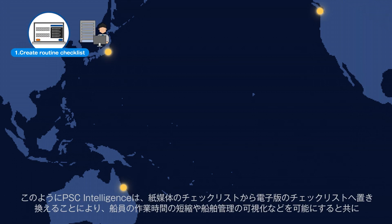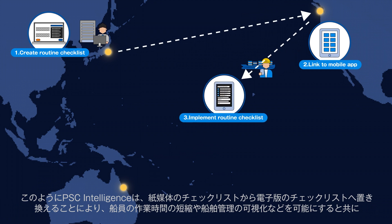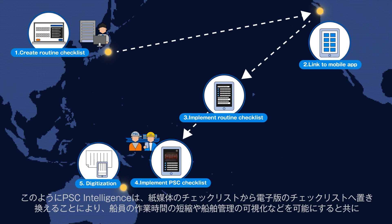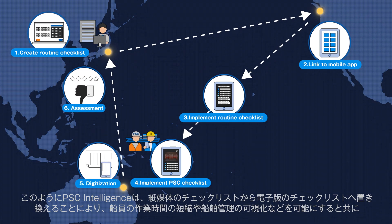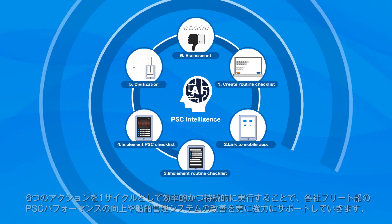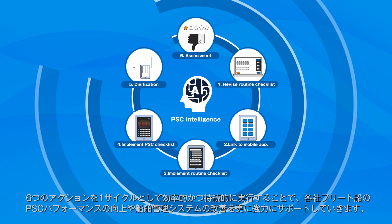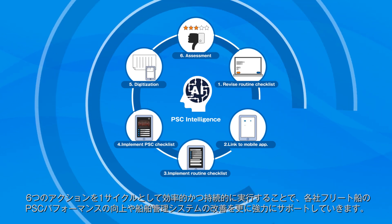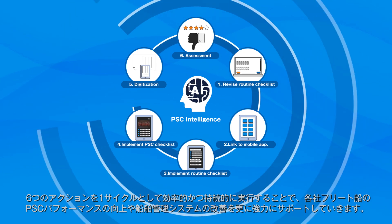In this way, PSC Intelligence will allow crews and management companies to save working time and have better visibility over their ship management by replacing papers with modern electronic checklists. It will further support the improvement of PSC performance for each company's fleet and ship management systems by efficiently and sustainably implementing the six actions as a single cycle.